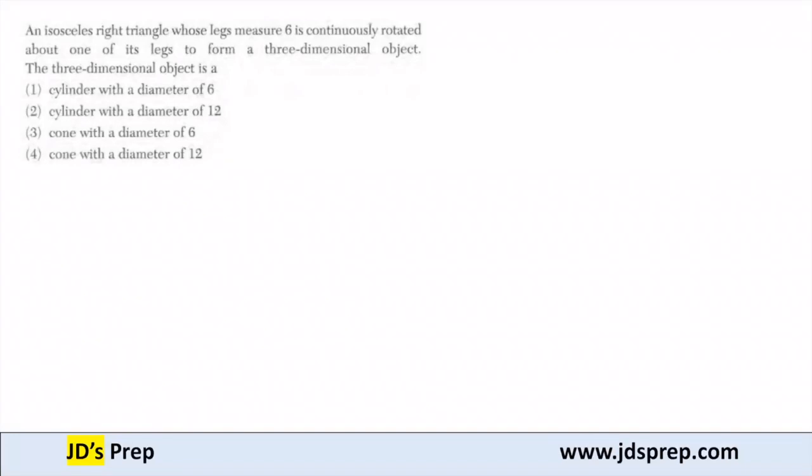Hello, welcome to JD's Prep. In this example, an isosceles right triangle whose legs measure 6 is continuously rotated about one of its legs to form a three-dimensional object. We're trying to figure out which type of three-dimensional object that will be.